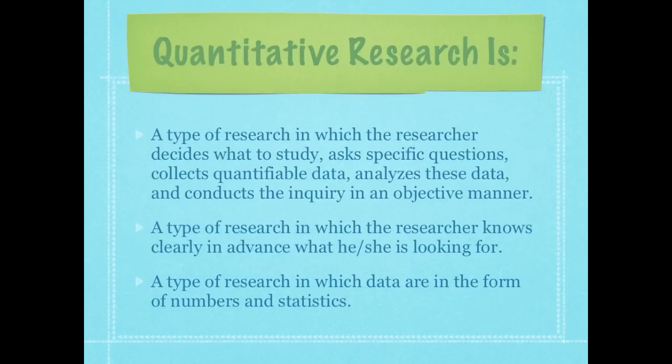No bias is allowed. Quantitative research is also a type of research in which the researcher knows clearly in advance what he or she is looking for. An exception to this might be found in the phenomenon of data mining out of large data sets, but basic quantitative research generally means that the researcher already knows what he or she is going to measure. It is also a type of research in which data are in the form of numbers and statistics. Quantify means to number — quantitative research is number research.